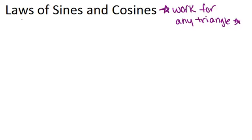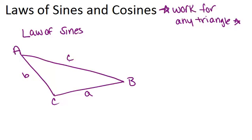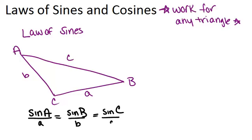The law of sines works like this. If you have any triangle, whether it's a right triangle or not, and you label the three angles A, B, and C, and the three sides where the opposite sides are the same letter as the angle — so side A, side B, and side C — it will always be the case that sine of angle A over side A will be in the same ratio as the sine of angle B over side B, which will also be in the same ratio as the sine of angle C over side C. The sine of any angle divided by its opposite side length will equal the sine of any other angle divided by its opposite side length.